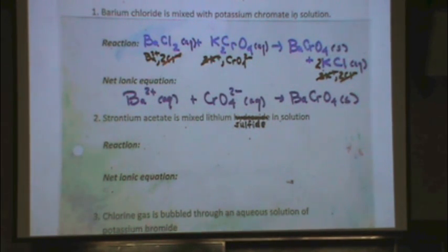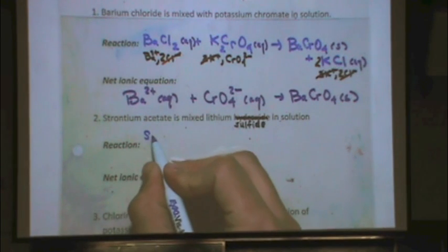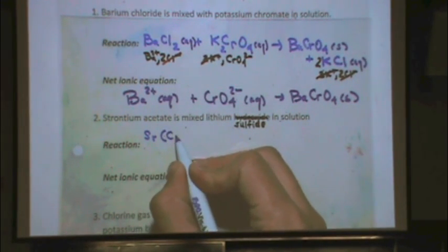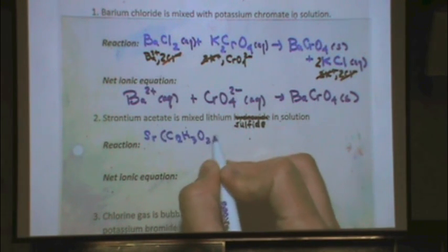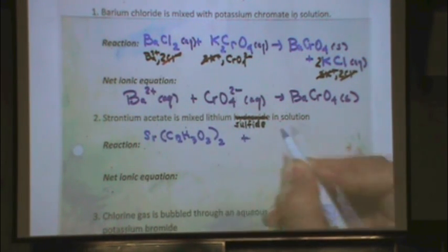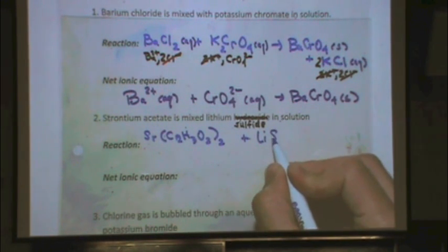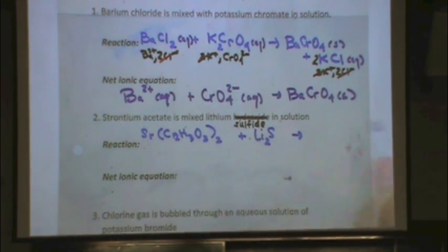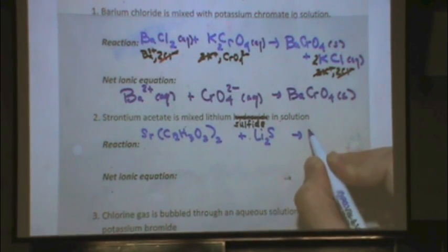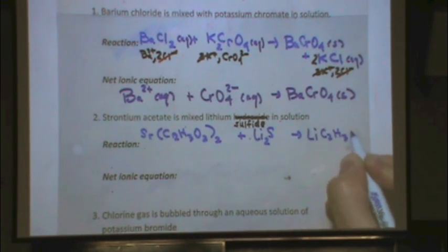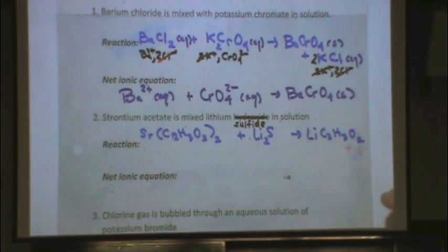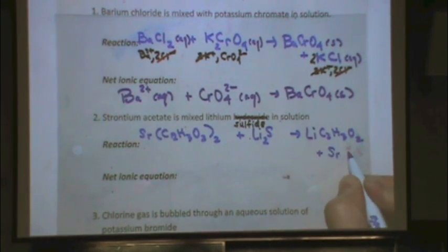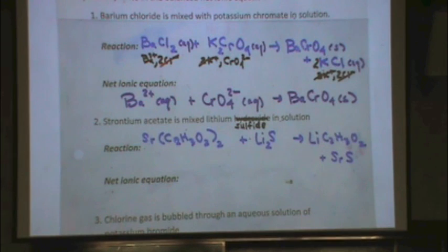Next example: strontium acetate. Strontium is plus 2, acetate is minus 1. Then we have lithium sulfide: lithium is plus 1, sulfide is minus 2, so I need 2 lithiums. This is a double replacement, so the products are lithium acetate — lithium plus 1, acetate minus 1, so one of each — and strontium sulfide — strontium plus 2, sulfide minus 2. I need to put a 2 in front of lithium acetate to balance.